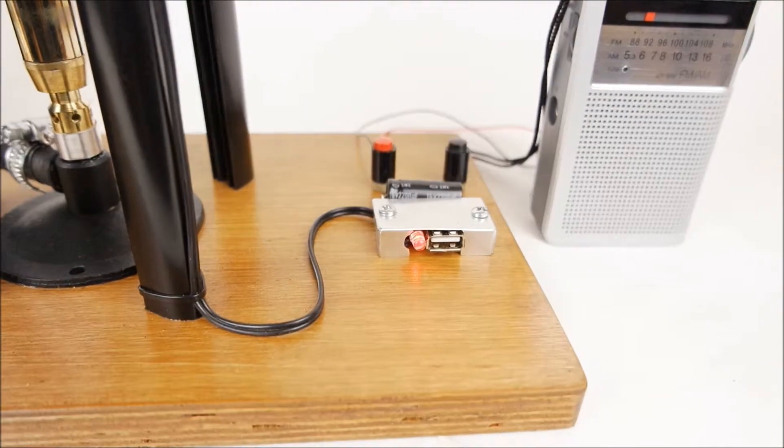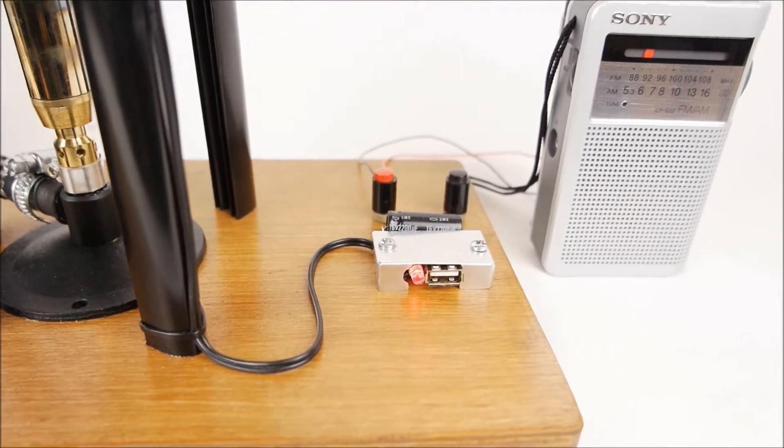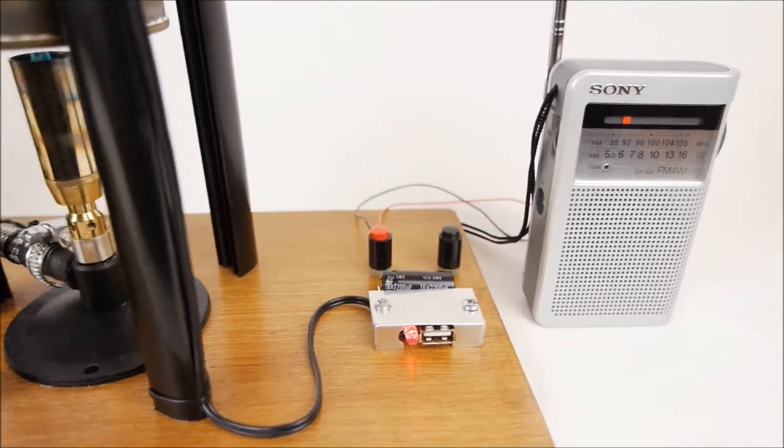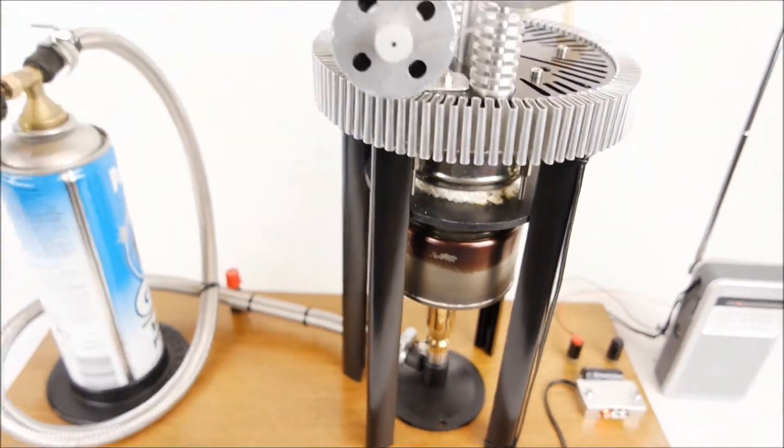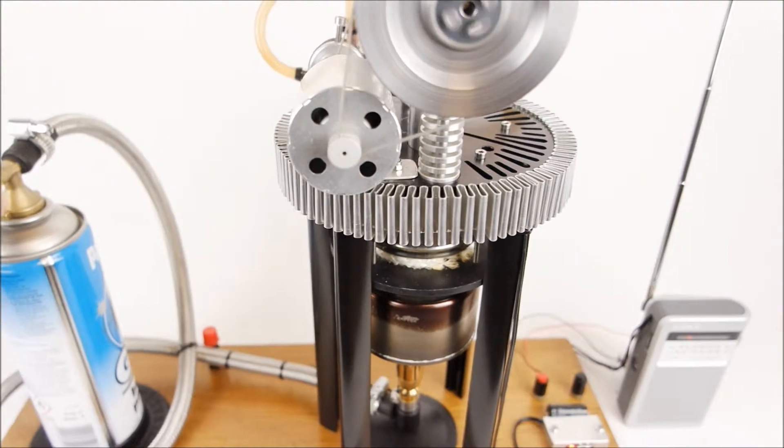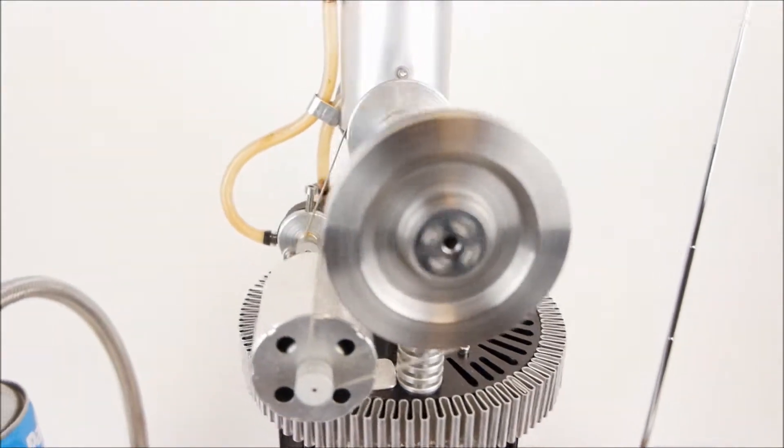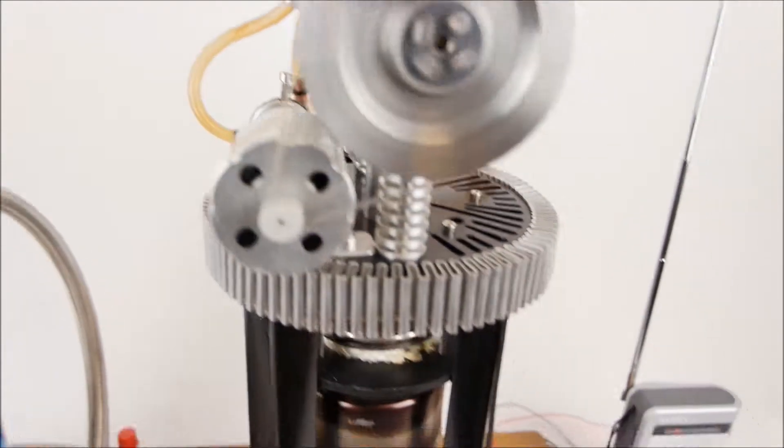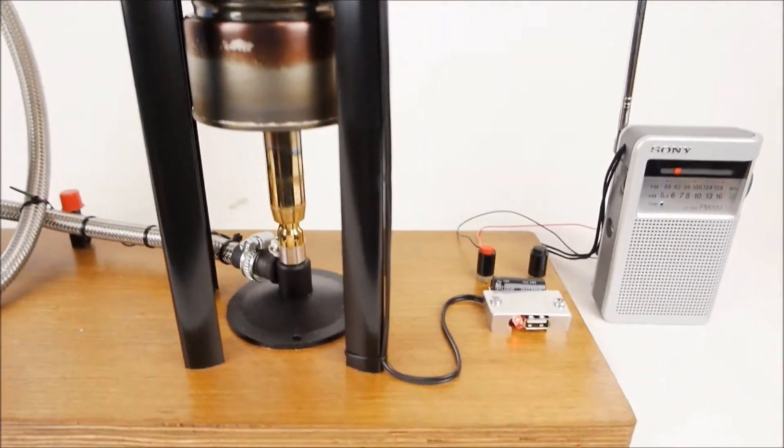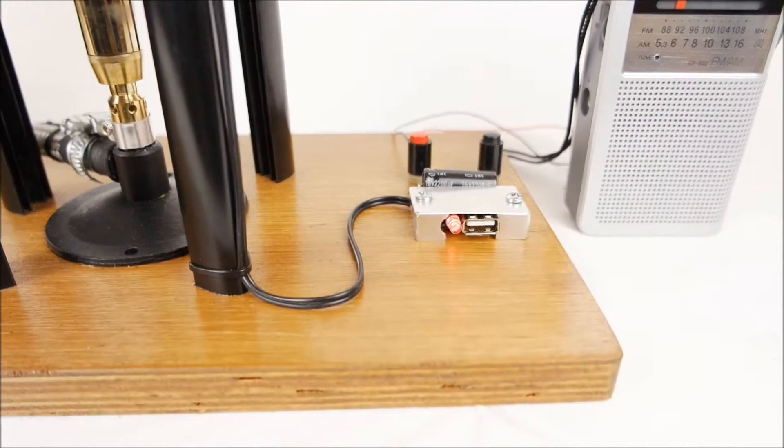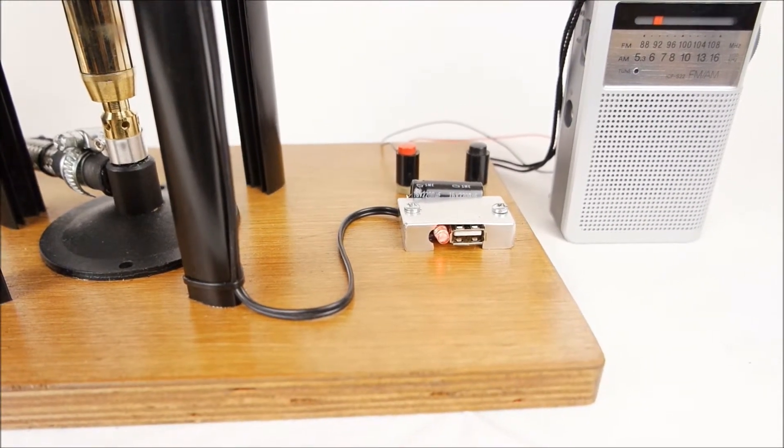You can see the pilot light indicating that the charge is still on. If we switch the propane off, you can hear the engine slowing down and the pilot lights start dimming.